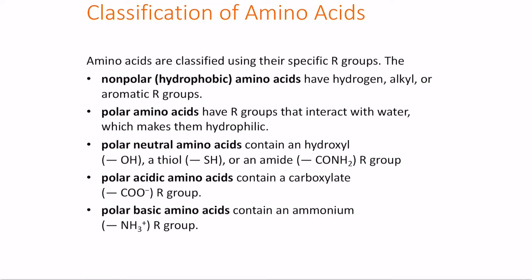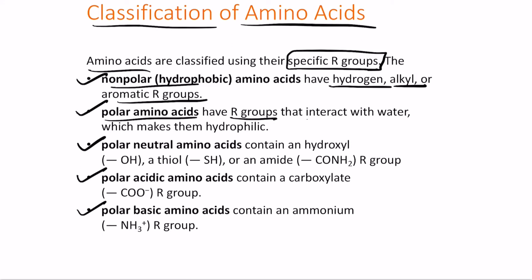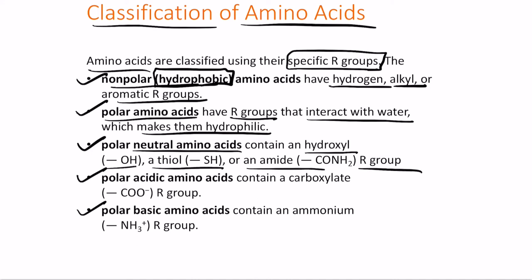There are 20 different amino acids, classified by their R groups attached to the alpha carbon. They can be nonpolar, polar neutral, polar acidic, or polar basic. Nonpolar amino acids have hydrogen, alkyl, or aromatic R groups and are hydrophobic. Polar amino acids have R groups that interact with water, making them hydrophilic. Polar neutral amino acids have R groups containing a hydroxyl group, thiol, or amide.